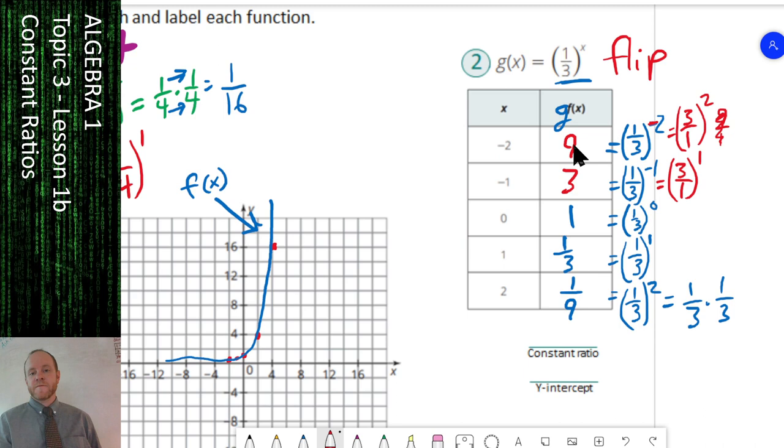Now we've got our table filled out. Our constant ratio—we started with 9. And then there's something we can multiply 9 by to turn it into 3. Same thing that we multiply by turns it into 1. And that is this 1 third. And sure enough, if we take 3 and we multiply it by 1 third, we get 1. If we have 1, we cut it into thirds, we get 1 third. And so on. So go ahead and take your y-intercept, which is the y value when x is 0.